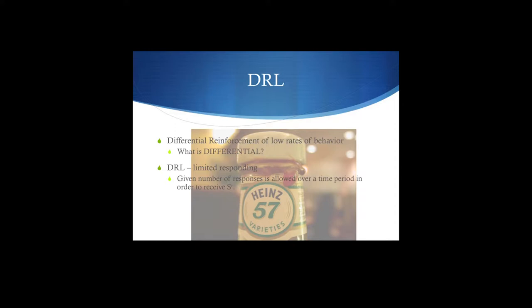For example, some people participate in class at higher rates than others. If you have somebody that participates too much, you can put them on a differential reinforcement schedule — a DRL limited responding situation — where you say only two or three comments a day are going to be reinforced. I'm not going to reinforce you if you do any more than two comments. That's your DRL — you're lowering that rate.